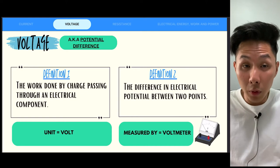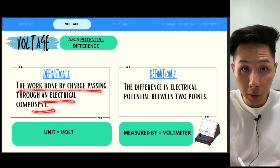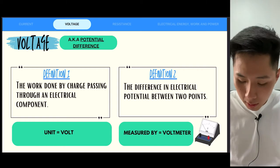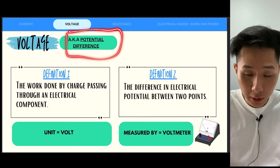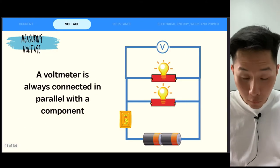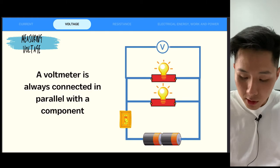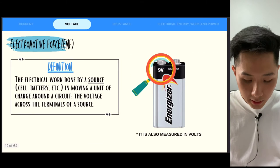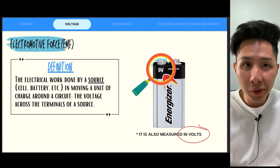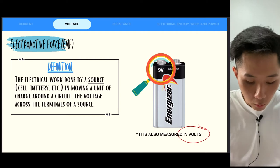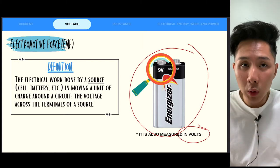Let's look into another quantity: voltage. There are two definitions. First, the work done per unit charge passing through an electrical component — how much work is done to move one coulomb of charge. Definition two is the difference in electrical potential between two points. Voltage — you can also call it potential difference — these two terms are interchangeable. The voltmeter is connected in parallel, whereas the ammeter is connected in series. There's also the term electromotive force (EMF), also measured in volts, used when talking about electrical work done by a source such as a cell, battery, or power supply.